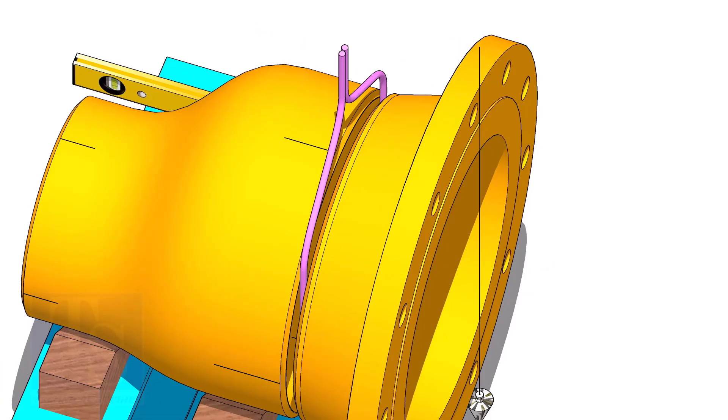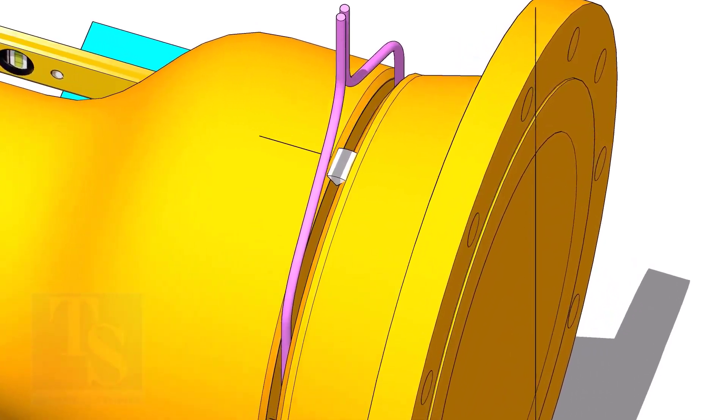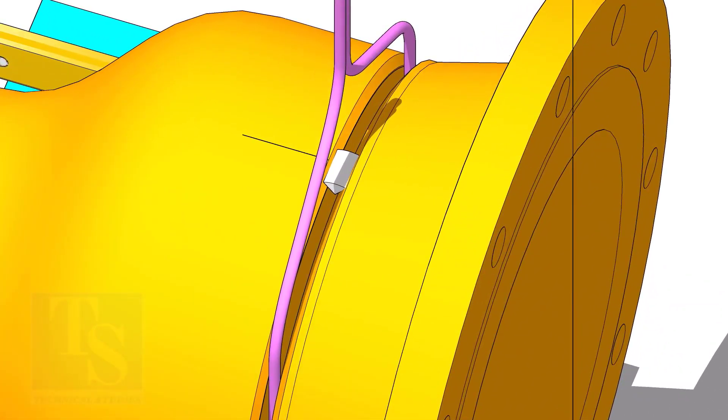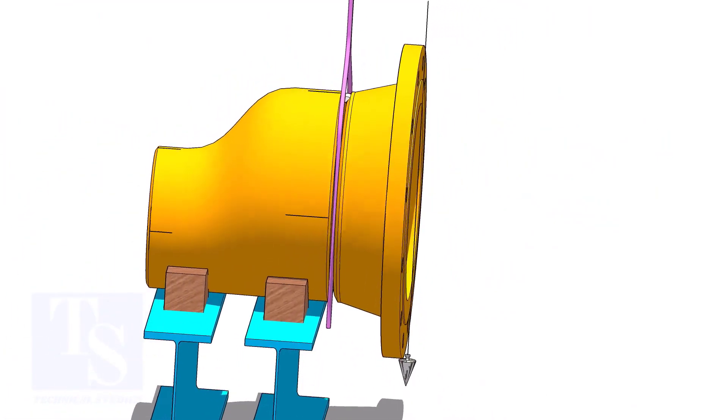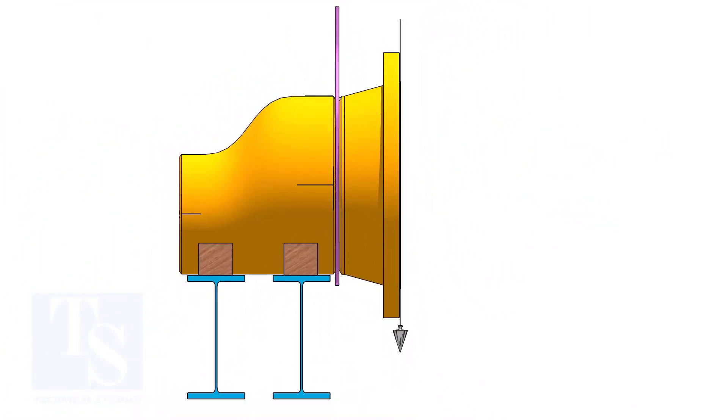Tack weld on the top side of the joint. Check the vertical plumbness, if correct, tack weld at the bottom side.